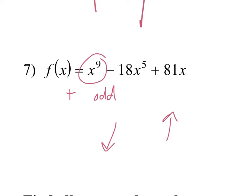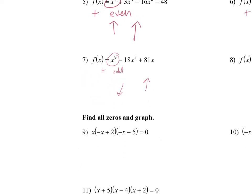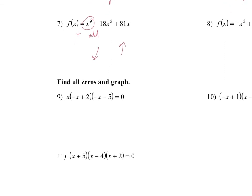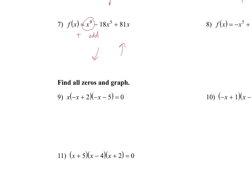If it's negative and odd, it will be up and then down. Remember, odd means opposite directions. So if it's negative, it goes down. And if it's odd, it goes up — so up and then down.